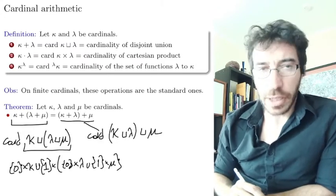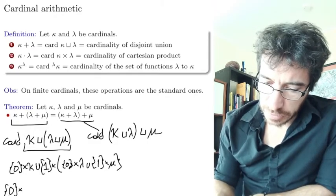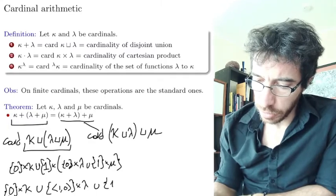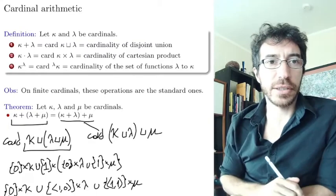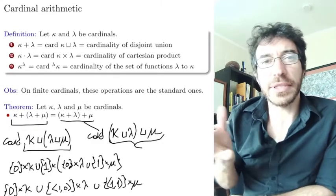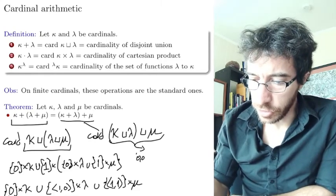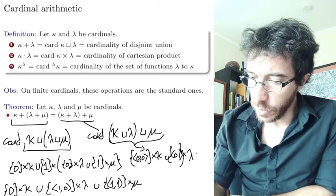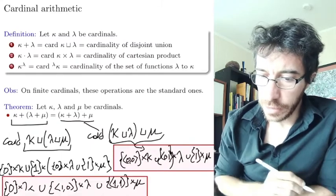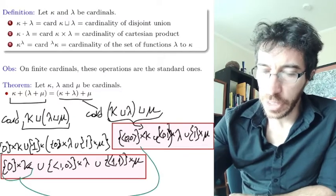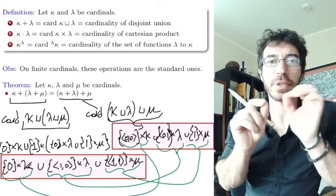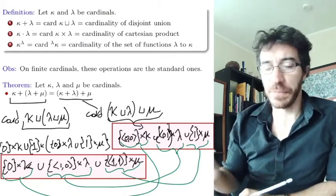Working through the cross products and unions, we get {0} × kappa ∪ {(1,0)} × lambda ∪ {(1,1)} × mu. The other side gives {(0,0)} × kappa ∪ {(0,1)} × lambda ∪ {1} × mu. It's not hard to see that these two sets are equinumerous — you map the first set to the second set, the second to the third, define the bijection, and you get the bijection between the two sides.